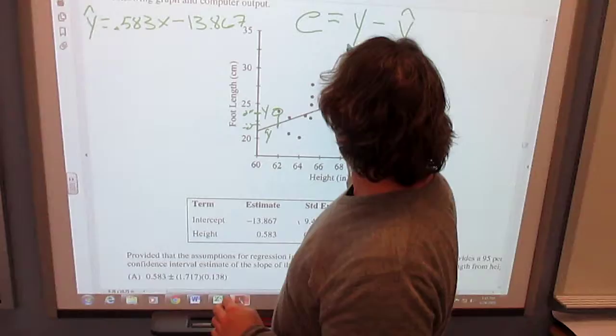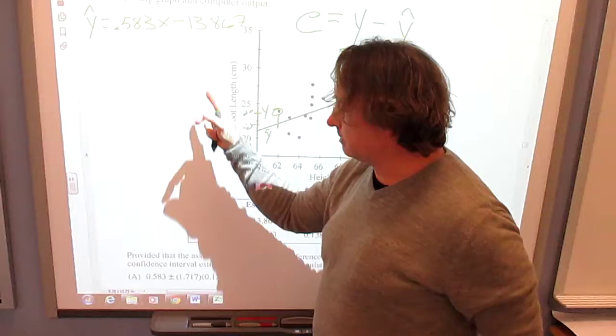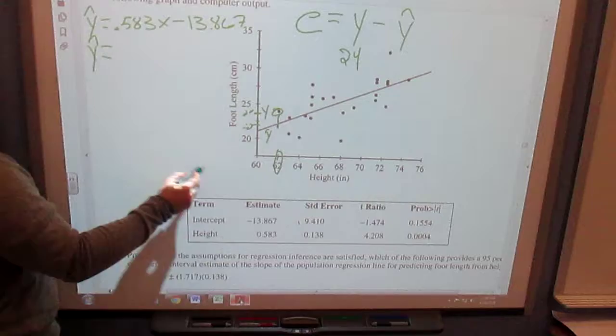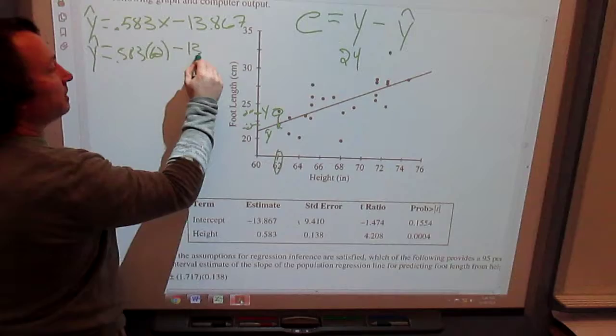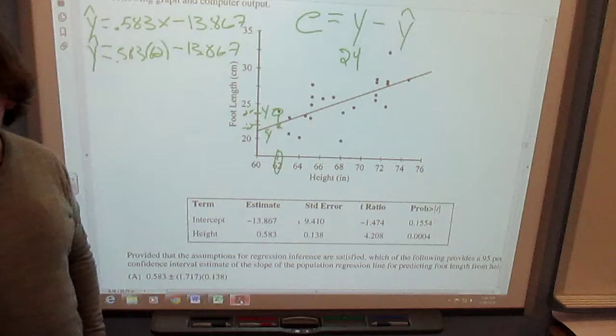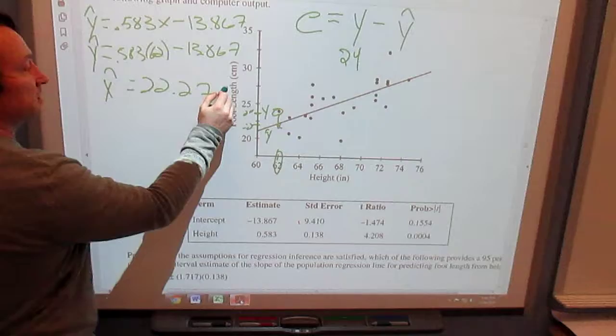Well, we're saying that the actual Y is 24. How do I get the Y hat? We're going to do .583 times X minus 13.867. So here my X is at 62. So my predicted foot length, this point here on the line, is really .583 times 62 minus 13.867. And you guys did that, what did we get for that? We got 22.27. So Y hat would be 22.279.